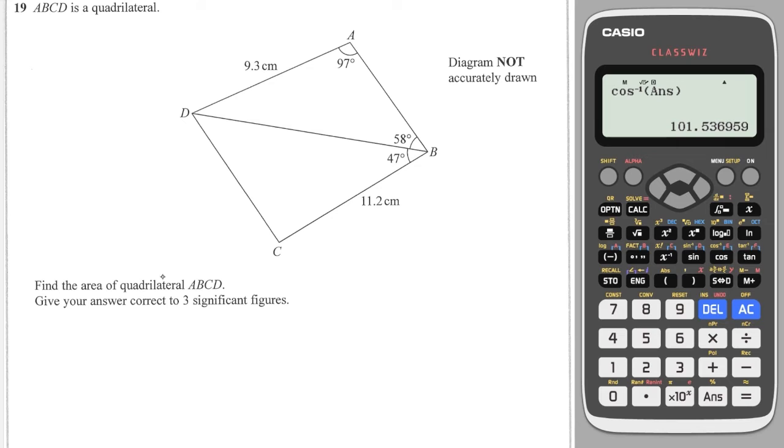Next question, I'm asked to find the area of the whole quadrilateral. So the first thing to spot is you've got a triangle here with two angles which means straight away you can work out the third by taking away 97 and 58 from 180 to get 25.